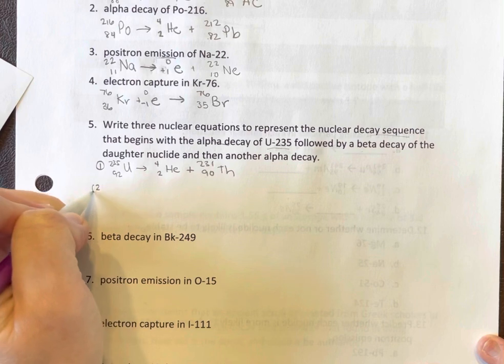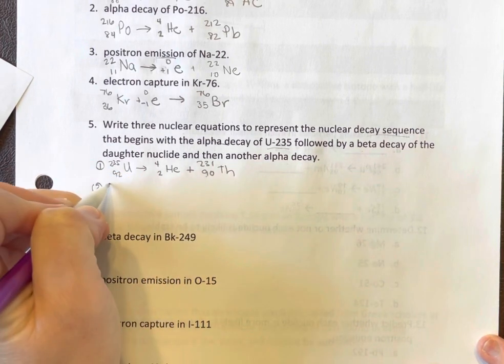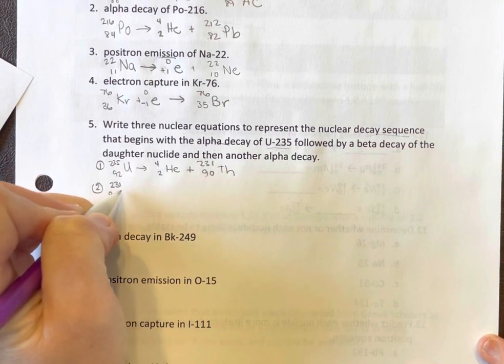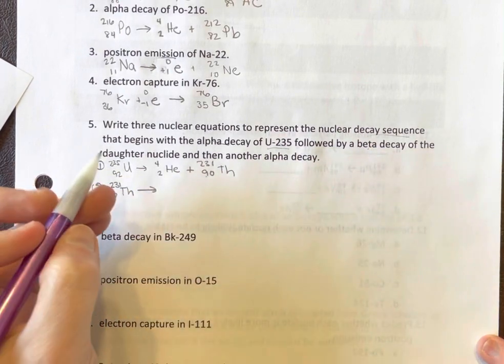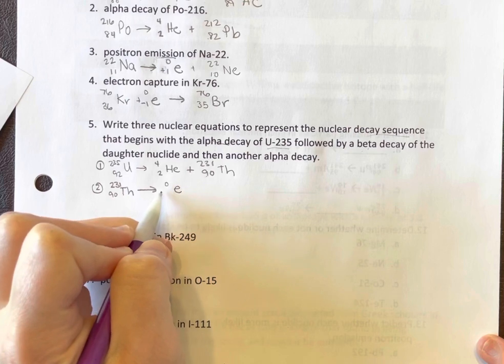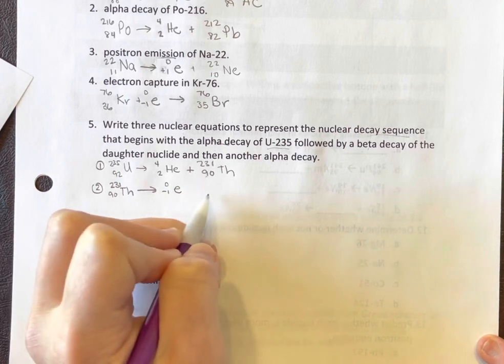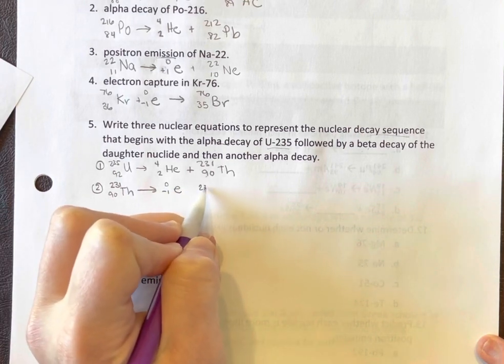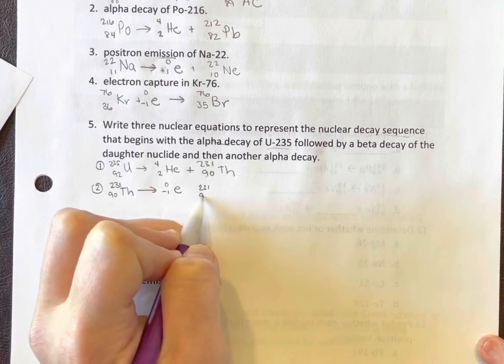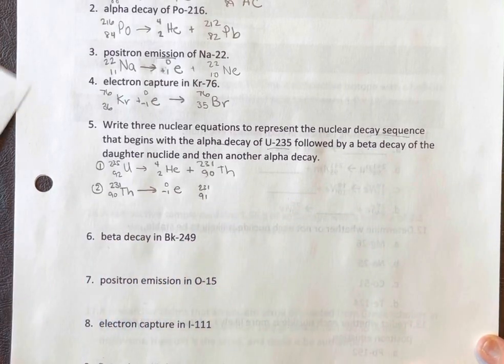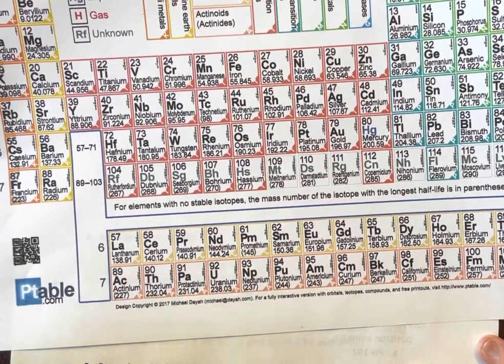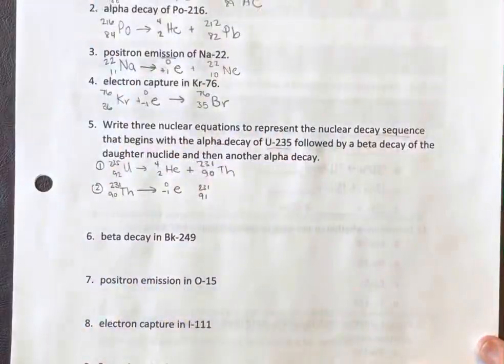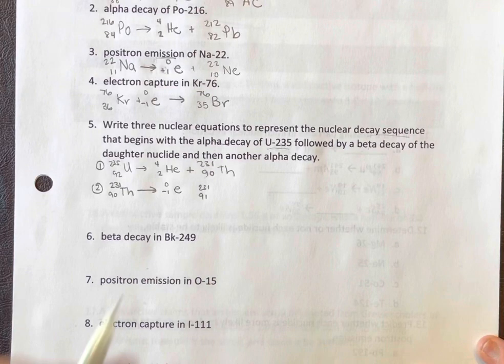So now our second equation, bring down your daughter nuclide there. And it is now going to undergo beta decay. So beta decay, that's an electron. So no change in mass. Atomic number goes up by one. So now we're at protactinium, which is PA.